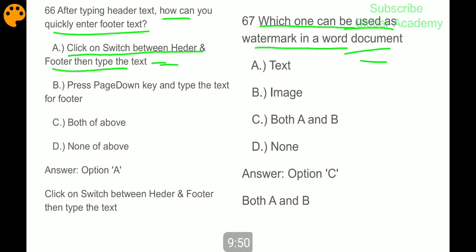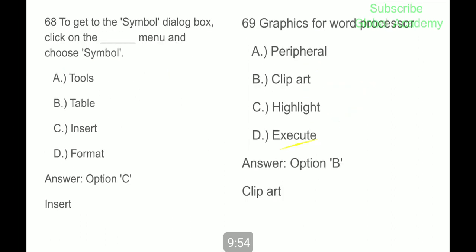Which one can be used as watermark in a Word document? Text, image, both. To get to the symbol dialog box, click on the insert menu and choose symbol. Graphics for word processors is clip art, B part.